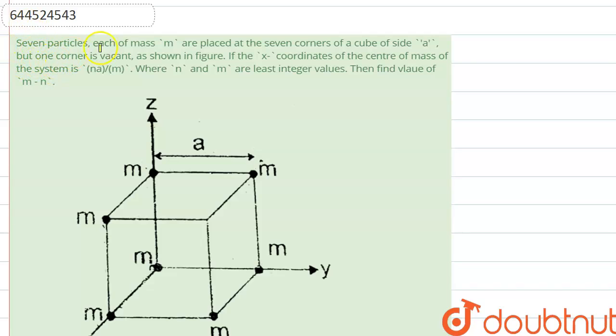are given that there are seven particles, each of mass m, placed on the seven corners of a cube of side a, but one corner is vacant as shown in the figure. If the x-coordinate of the center of mass is shown as na/m, where n and m are least integer values, then we have to find what will be the value of m minus n.